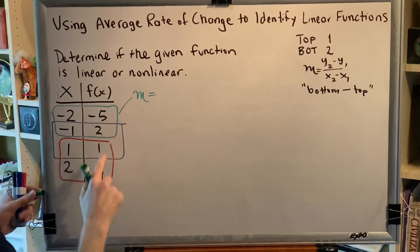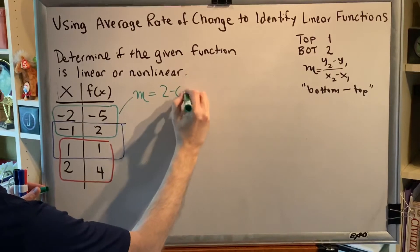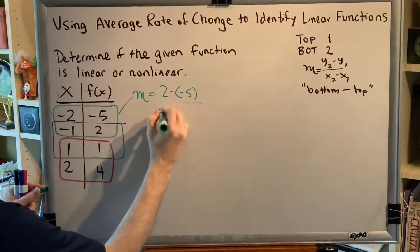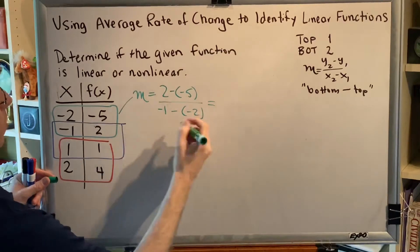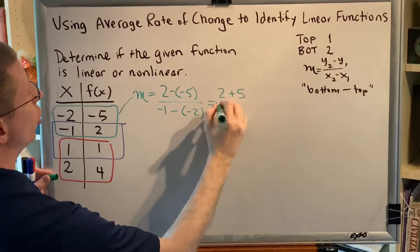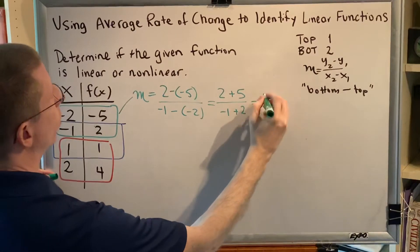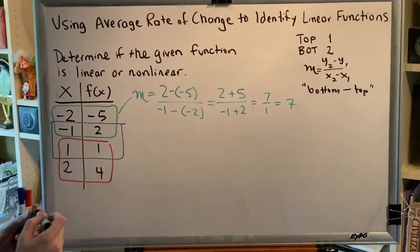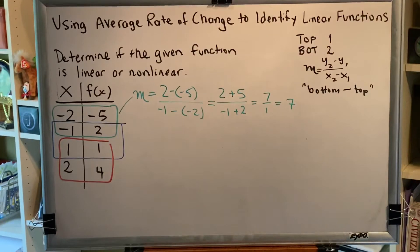With the green points, for the y's, bottom minus top would be two minus negative five. For the x's, bottom minus top would be negative one subtract negative two. In both cases, we're subtracting a negative, which turns into addition. So we have two plus five over negative one plus two, which is seven over one, which is seven.